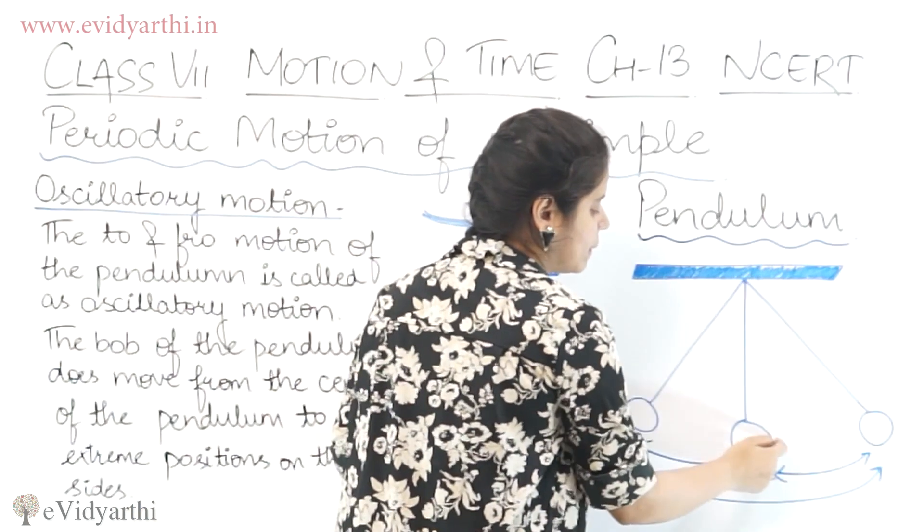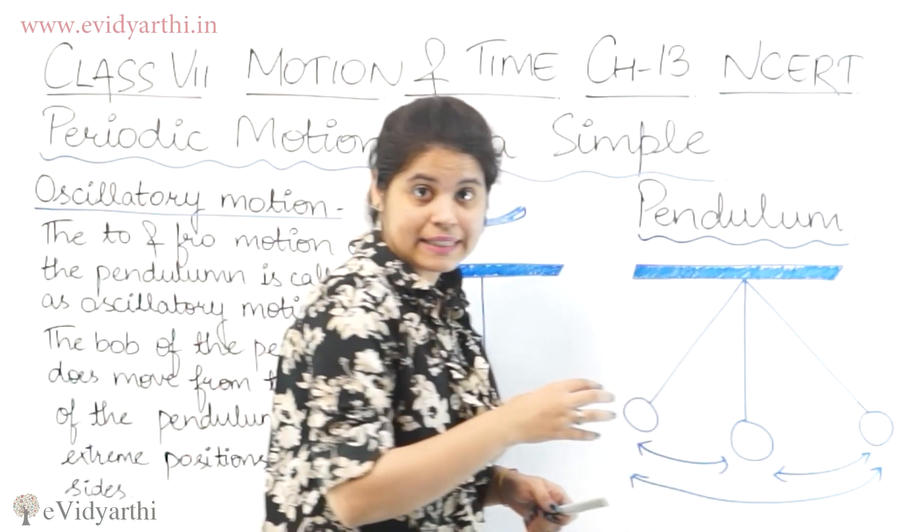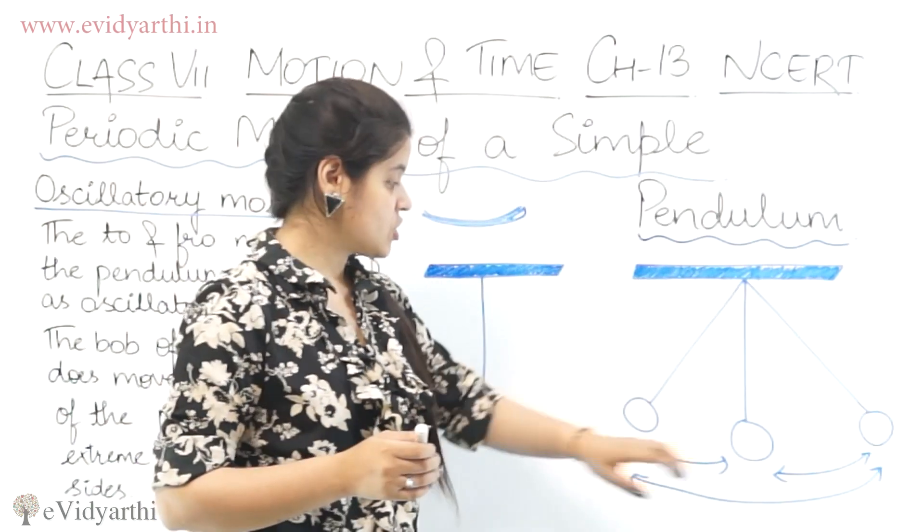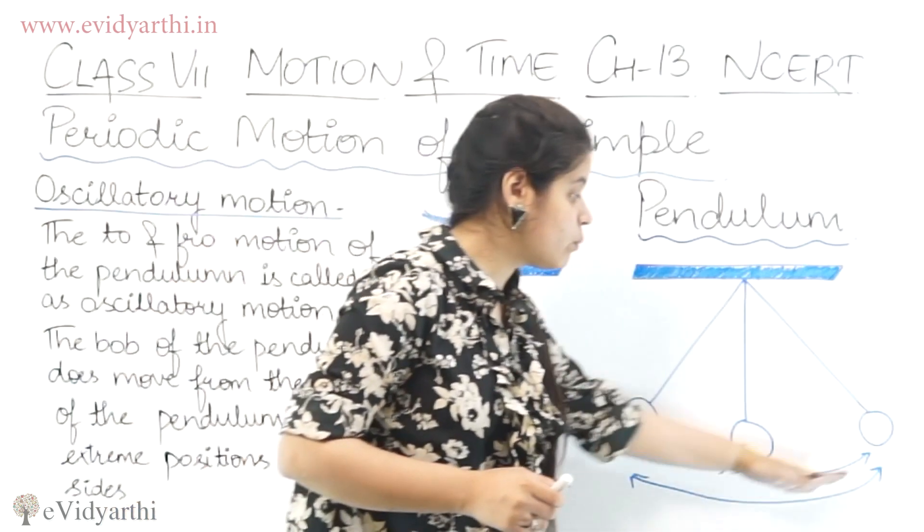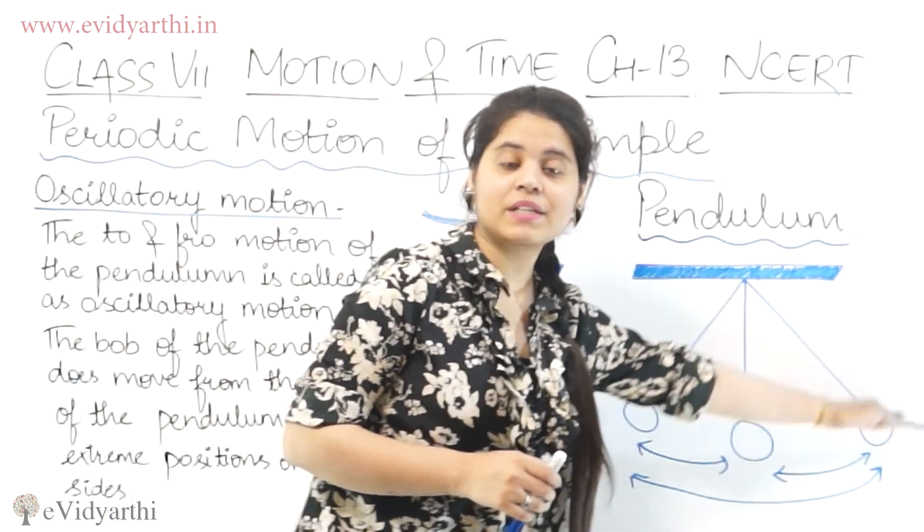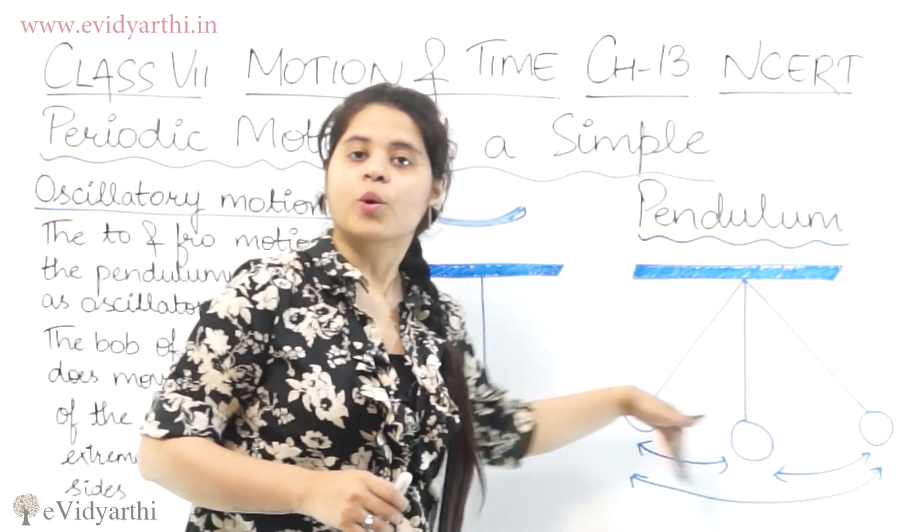If it is tied up here, this is its center, which is the mean position. From here it will go to this extreme, then it will go to that extreme. So this is how its movement happens.